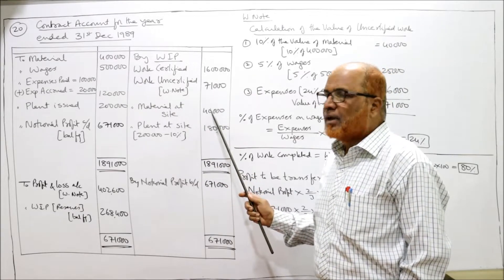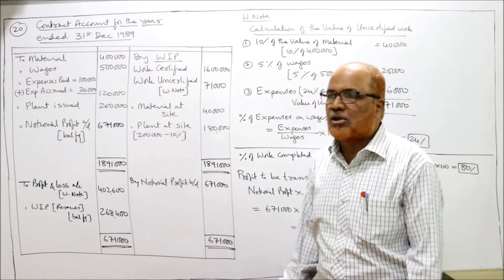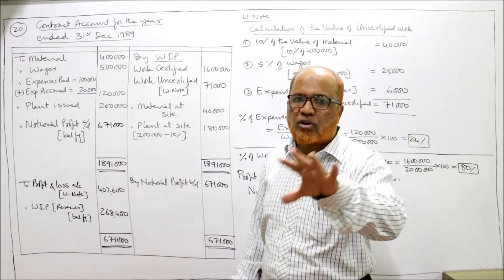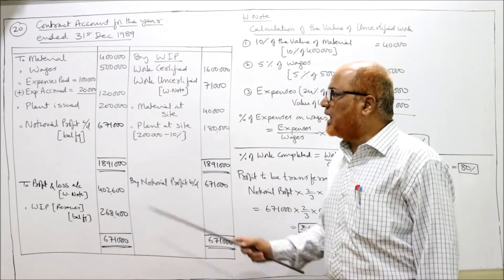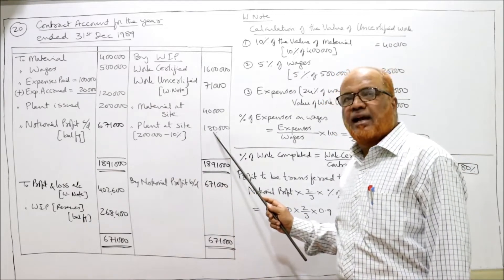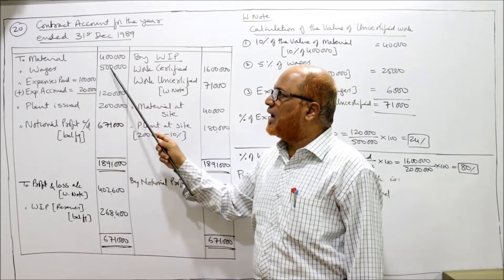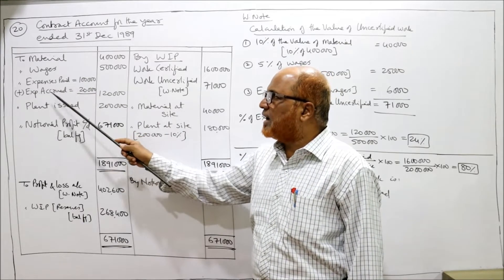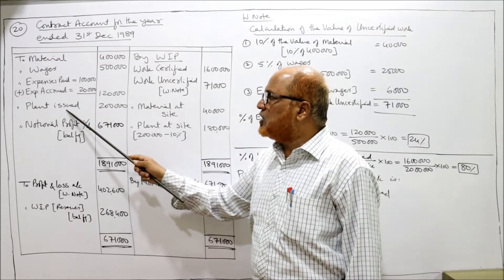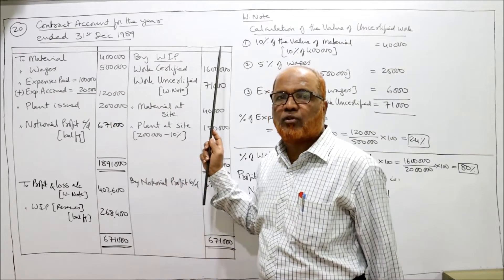Material at site is given in the problem. Depreciate plant at 10% as instructed. Plant issued was 2 lakh. 10% of 2 lakh is 20,000. So 2 lakh minus 20,000 equals 1 lakh 80,000 — this is the credit side. Debit side: to material 4 lakh, to wages 5 lakh, expenses paid 1 lakh, expenses accrued 20,000 — total expenses 1 lakh 20,000. Plant issued 2 lakh. The only thing remaining is uncertified work — we have to find that out.